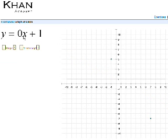This is y equals 0x plus 1. So we could have rewritten this as just y equals 1, because 0x is the same thing as 0. Notice it's a completely flat line. No matter what x is, y is 1. And that makes sense, because this equation would just be y equals 1.